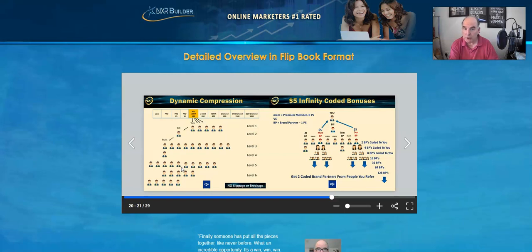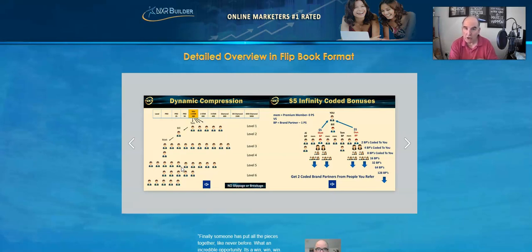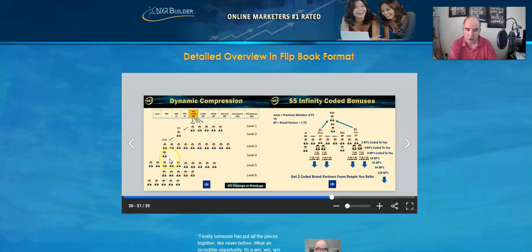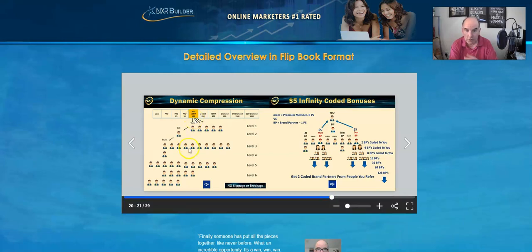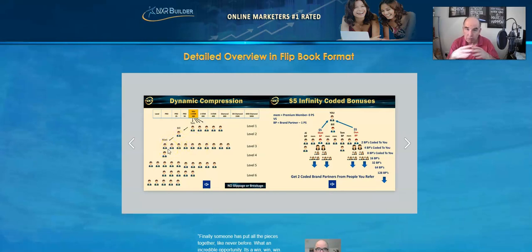With dynamic compression, how this works is all these commissions down there that Tom would have earned go to the first one star above him, which if you're a one star would be you. So you would earn all these commissions down there that are applicable because other people have not reached the sufficient level, the sufficient grade to earn other than say the first line, second line, whatever.